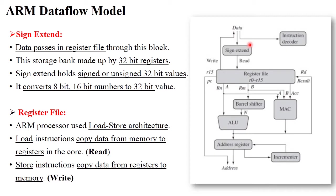The next component is sign extend. As we know, the ARM processor follows RISC architecture, and RISC architecture has a fixed length of 32 bits only. When the data bus sends data to the processor, sign extend checks whether the particular data is up to 32 bits or not. If it is 32-bit data, it sends the data to the register, checking for signed or unsigned 32-bit values. If the data bus sends 8-bit or 16-bit numbers, sign extend converts that data into 32 bits, because 32 bits is the maximum size for performing operations.